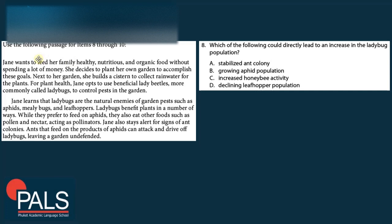For the next questions: Jane wants to grow her own healthy, organic garden without spending a lot of money. She builds a cistern to collect rainwater and uses beneficial ladybugs to control pests. Jane learns that ladybugs are the natural enemies of aphids, mealybugs, and leafhoppers. While they prefer to feed on aphids, they also eat pollen and nectar, acting as pollinators. Jane stays alert for ants, which feed on aphid products and can drive off ladybugs.